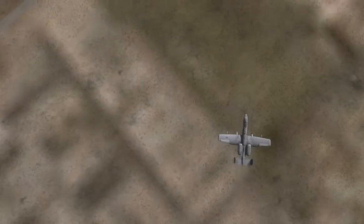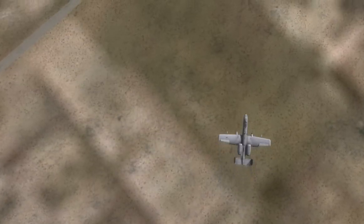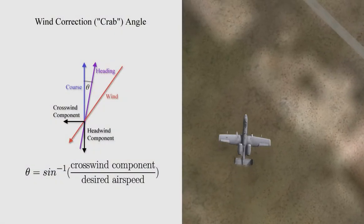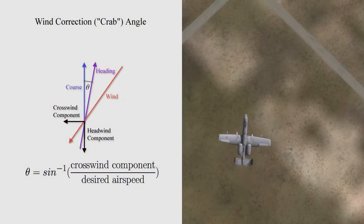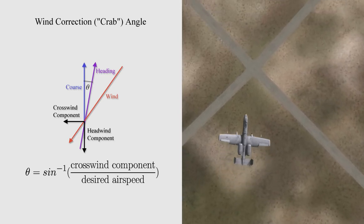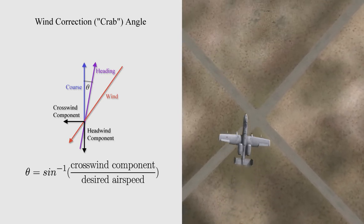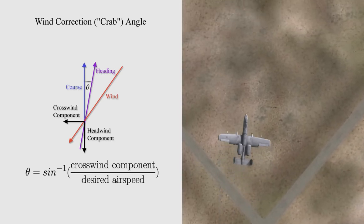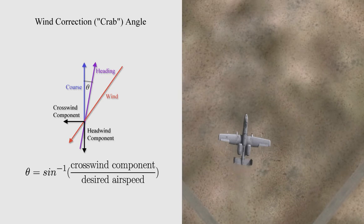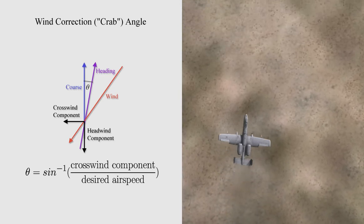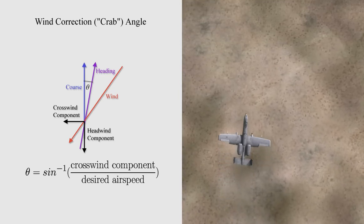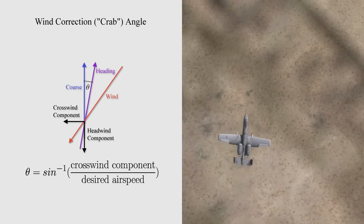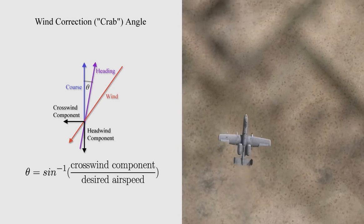I also promised you the formula for crab angle — here it is. This isn't something you need to memorize, but it is used to calculate the appropriate crab angle for a given wind direction and speed, whether it's being done automatically for you, by hand, or with a flight computer such as an E6B.